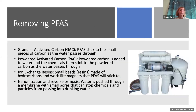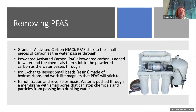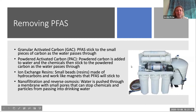To remove PFAS, there are four main methods. Granular activated carbon and powdered activated carbon are similar — carbon sticks to the PFAS, which can then be filtered out through a membrane, removing both the carbon and PFAS. Ion exchange resin uses small beads made of hydrocarbons that work like magnets — PFAS stick to the resins and are then removed from the water. Reverse osmosis is very popular; many Wilmington residents have home RO systems installed to purify their water. Home RO systems do take up a lot of space and can be expensive.